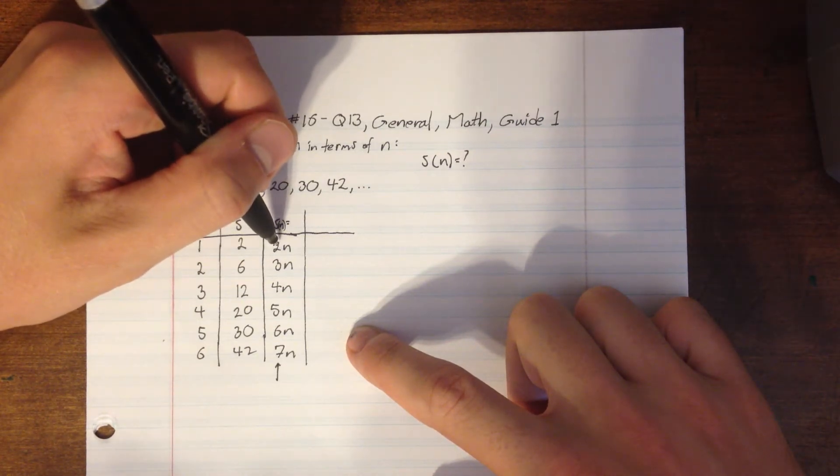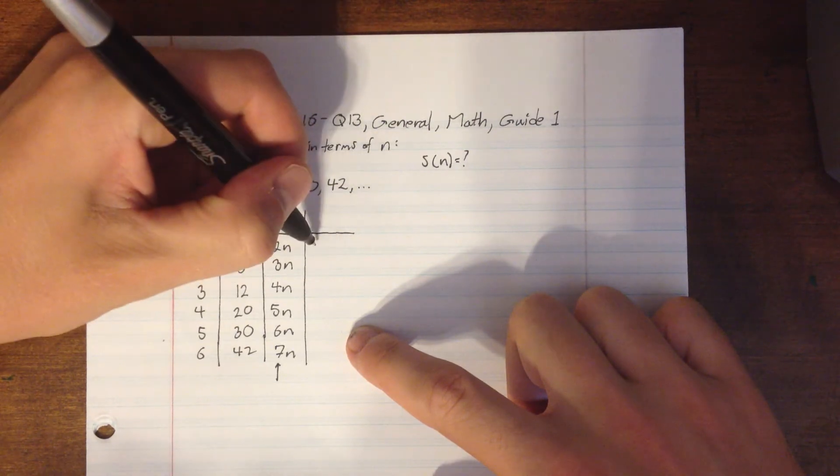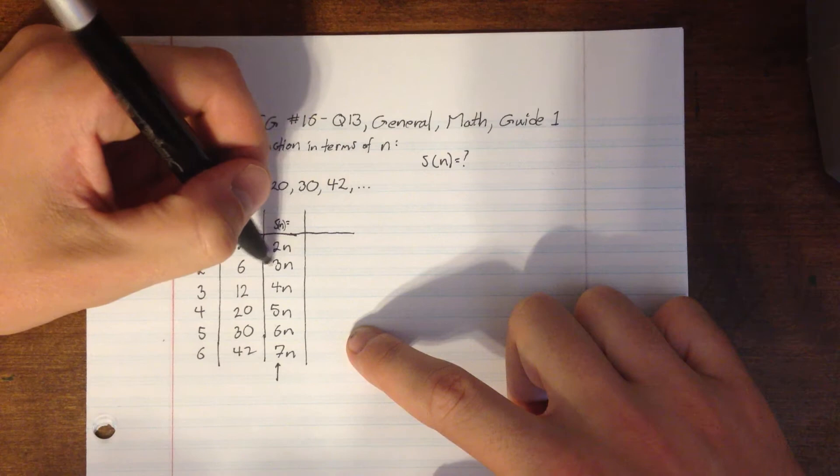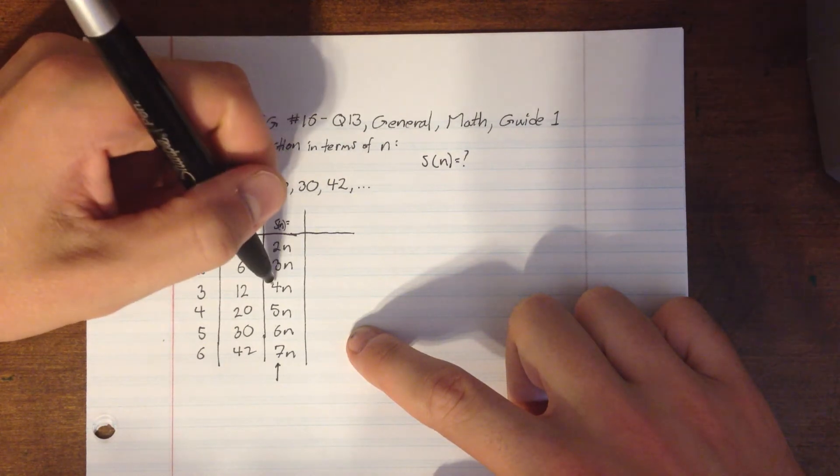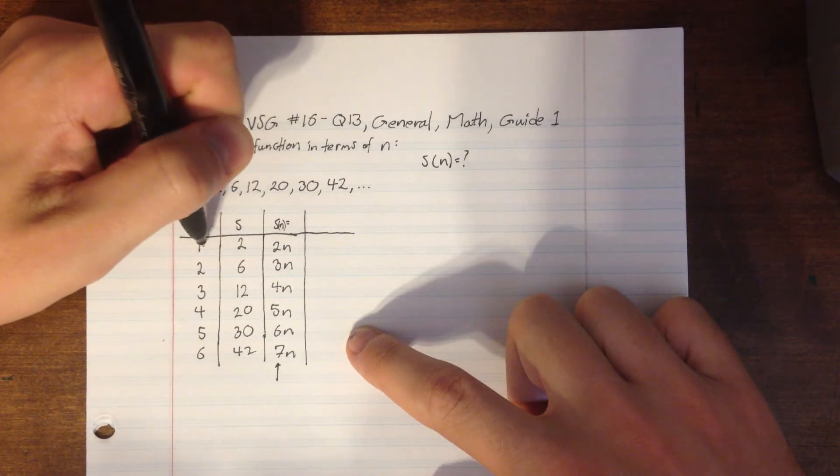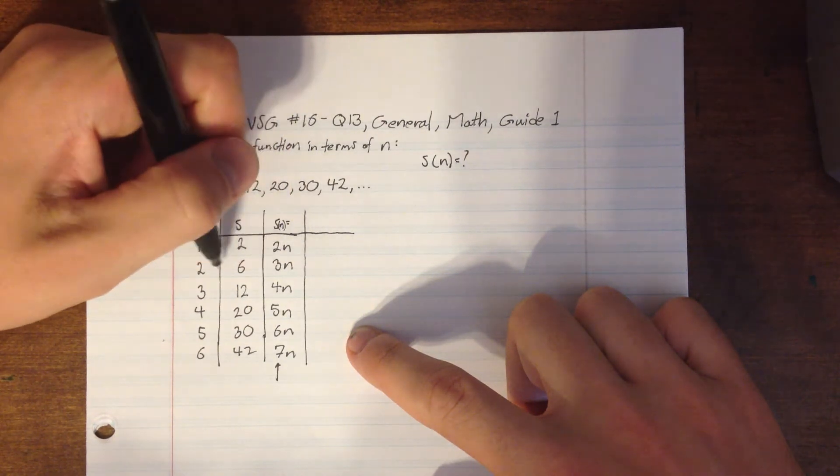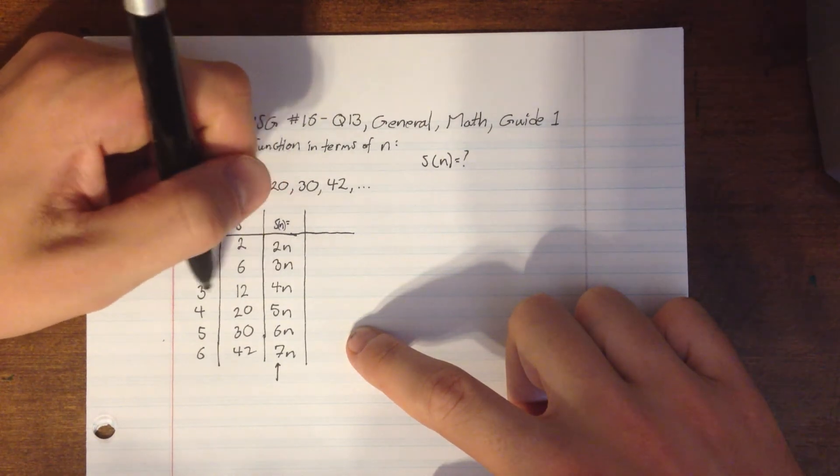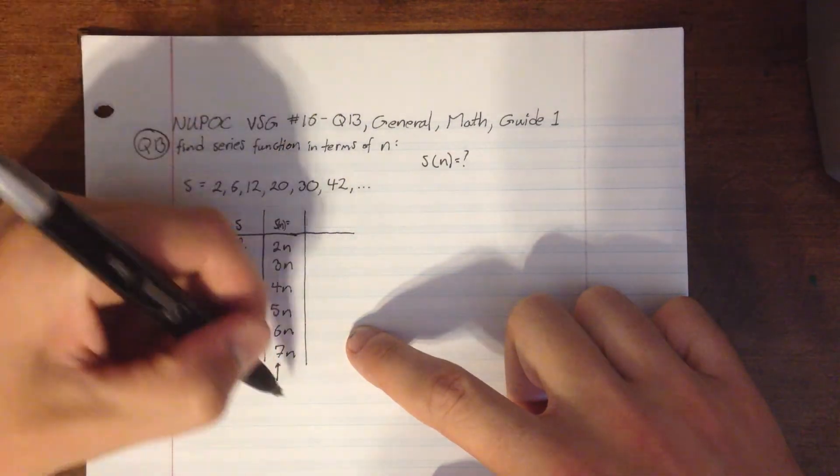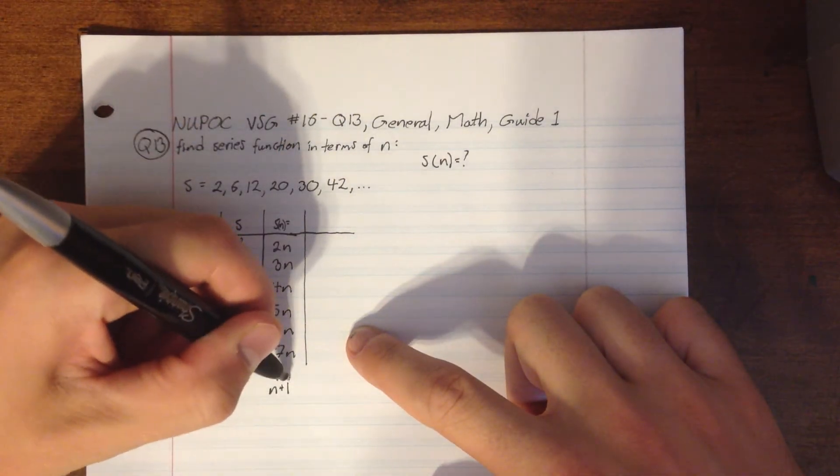So we could say maybe this is 2n times n. But let's try this here. Is 3 twice 2? No. Is 4 twice 3? No. But 2 is also n plus 1. 3 here looks like it's n plus 1. 4 looks like n plus 1. All the way down, these coefficients look like they're n plus 1.